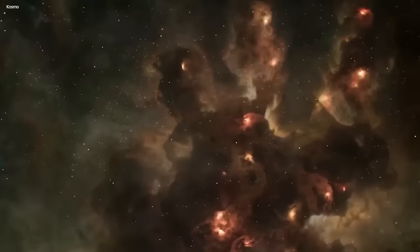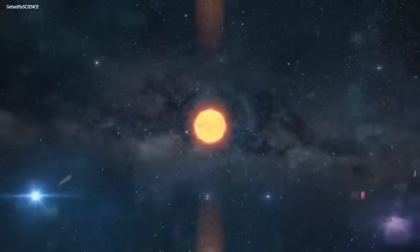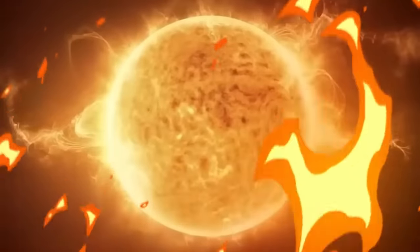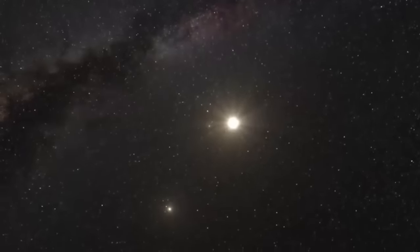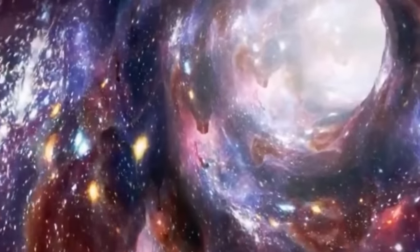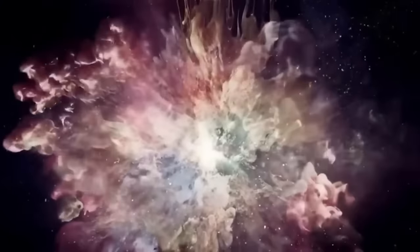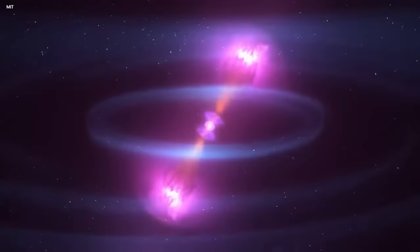Situated in the Orion constellation, Betelgeuse shines as a red supergiant star, captivating observers from its location approximately 642.5 light-years away from Earth. Its considerable distance contributes to its status as one of the most thoroughly studied and mesmerizing celestial objects visible in the night sky.